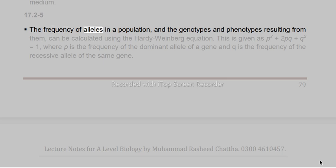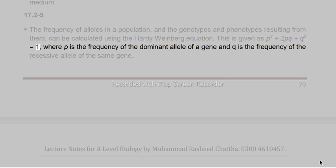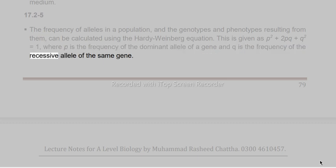The frequency of alleles in a population and the genotypes and phenotypes resulting from them can be calculated using the Hardy-Weinberg equation: p² + 2pq + q² = 1, where p is the frequency of the dominant allele and q is the frequency of the recessive allele of the same gene.